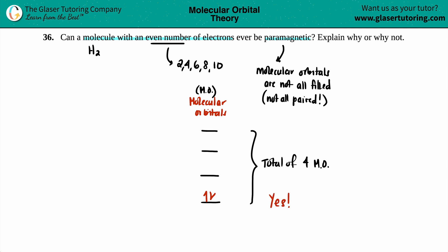So the answer is yes. It could be classified as paramagnetic. For even number of electrons, you could actually have paramagnetic and diamagnetic, depending.